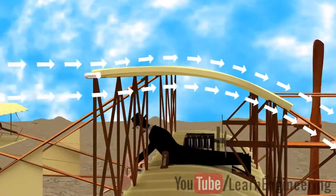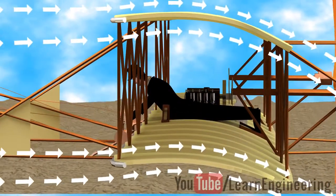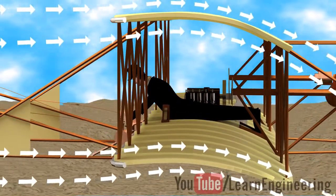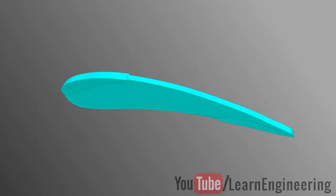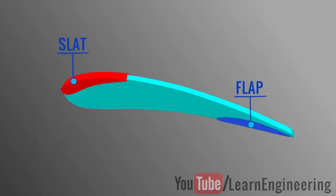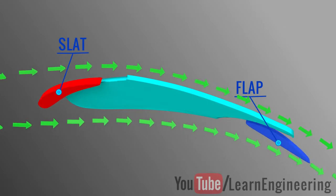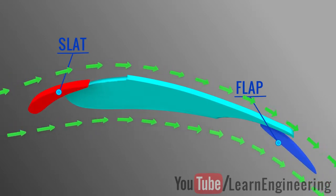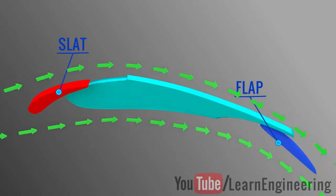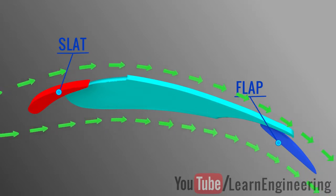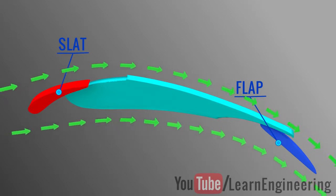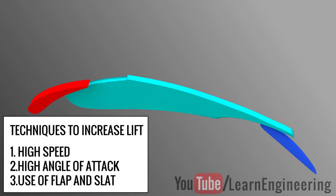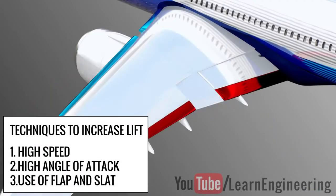One more idea to increase the lift force is by altering the airfoil shape. The alteration in shape will definitely increase the downwash and the wing area, hence giving greater lift. In short, there are three techniques to increase the lift of an airfoil. Let's apply this airfoil knowledge to the airplane.